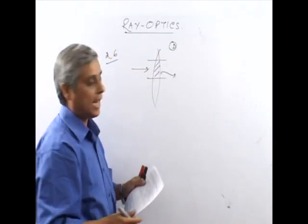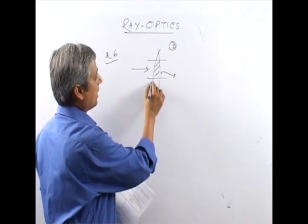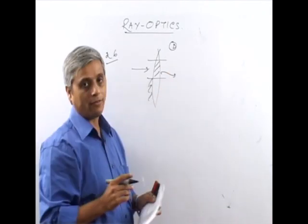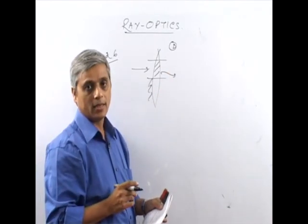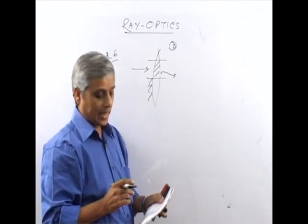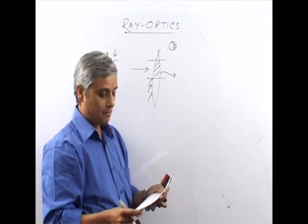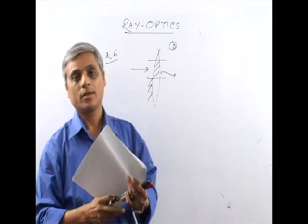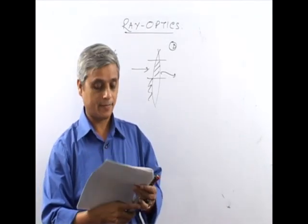Because half of the lens is covered, only half of the light passes through. Therefore, the intensity of the image will be halved. The answer to question 26 is D.